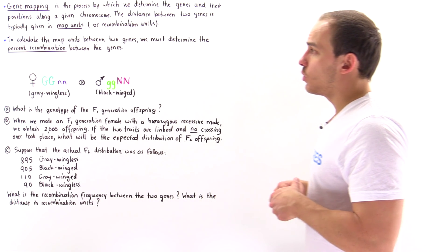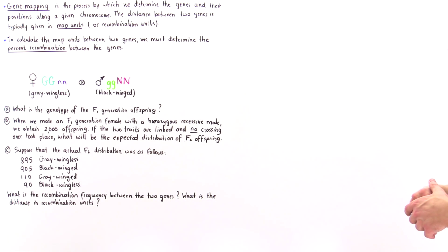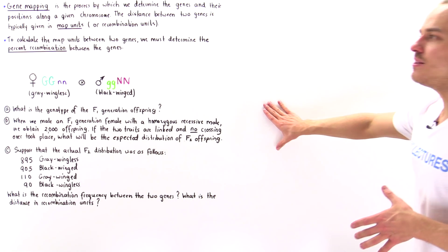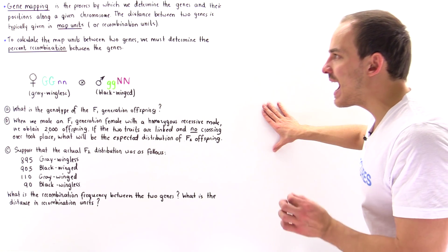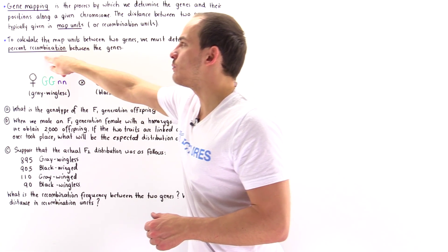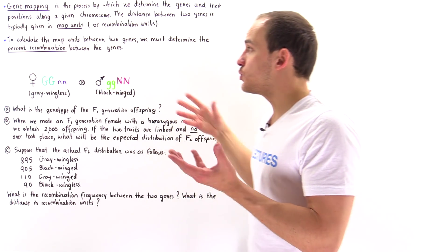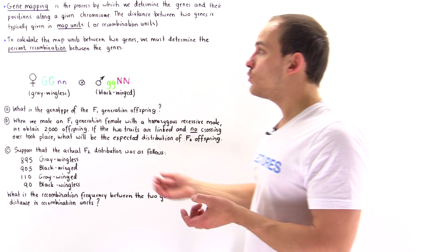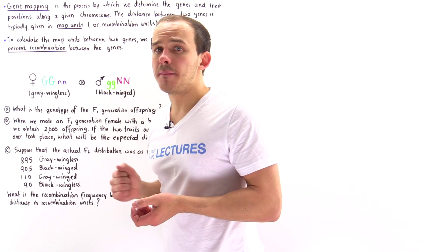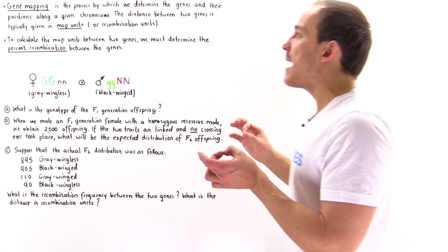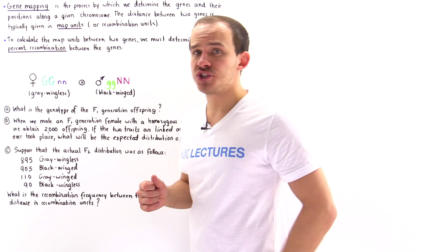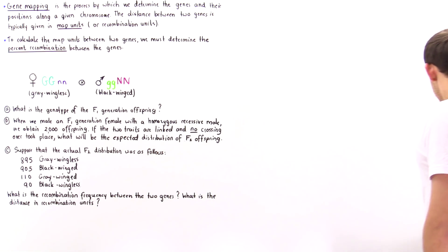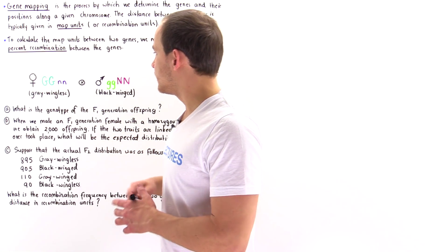To see exactly what we mean by that, let's take a look at the following example. We're going to discuss how to calculate the percent recombination between two genes, and how to use the percent recombination to find the map units — the distance in map units between those two genes.